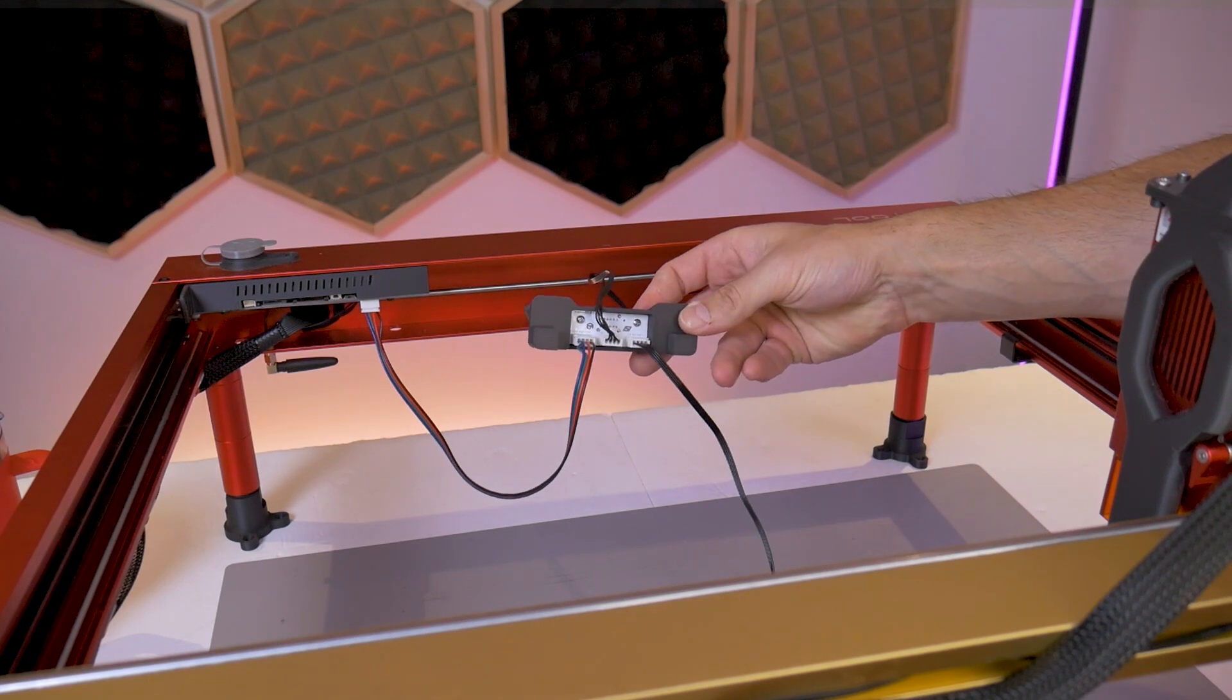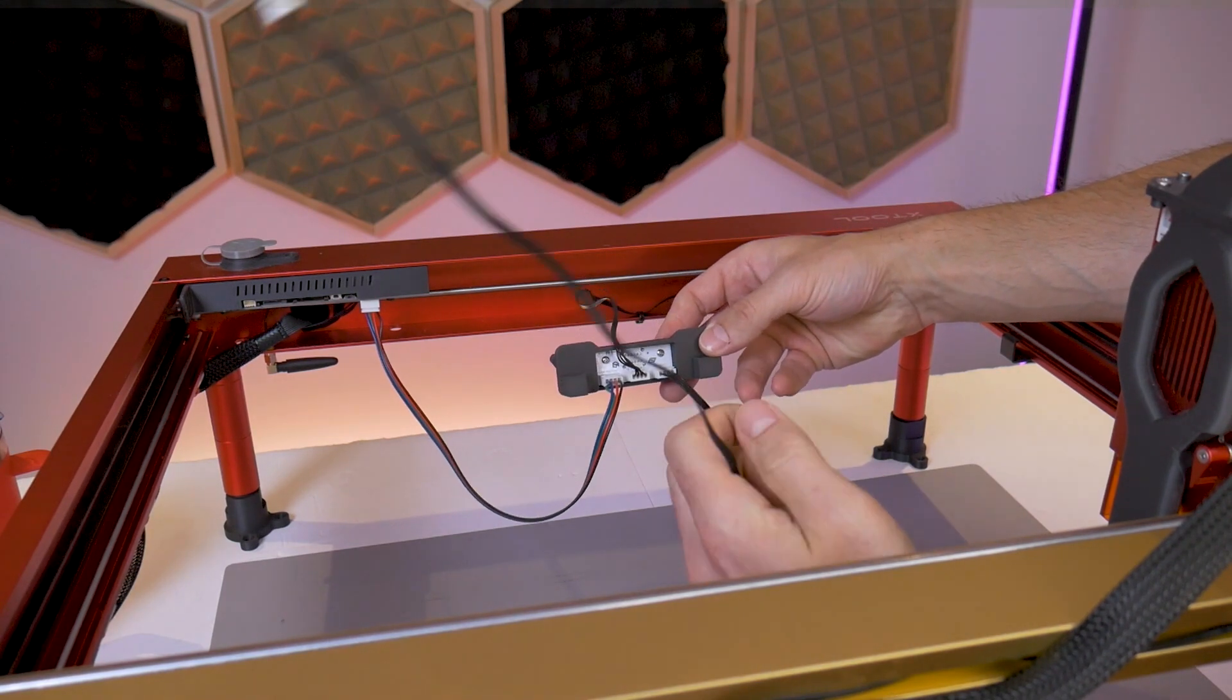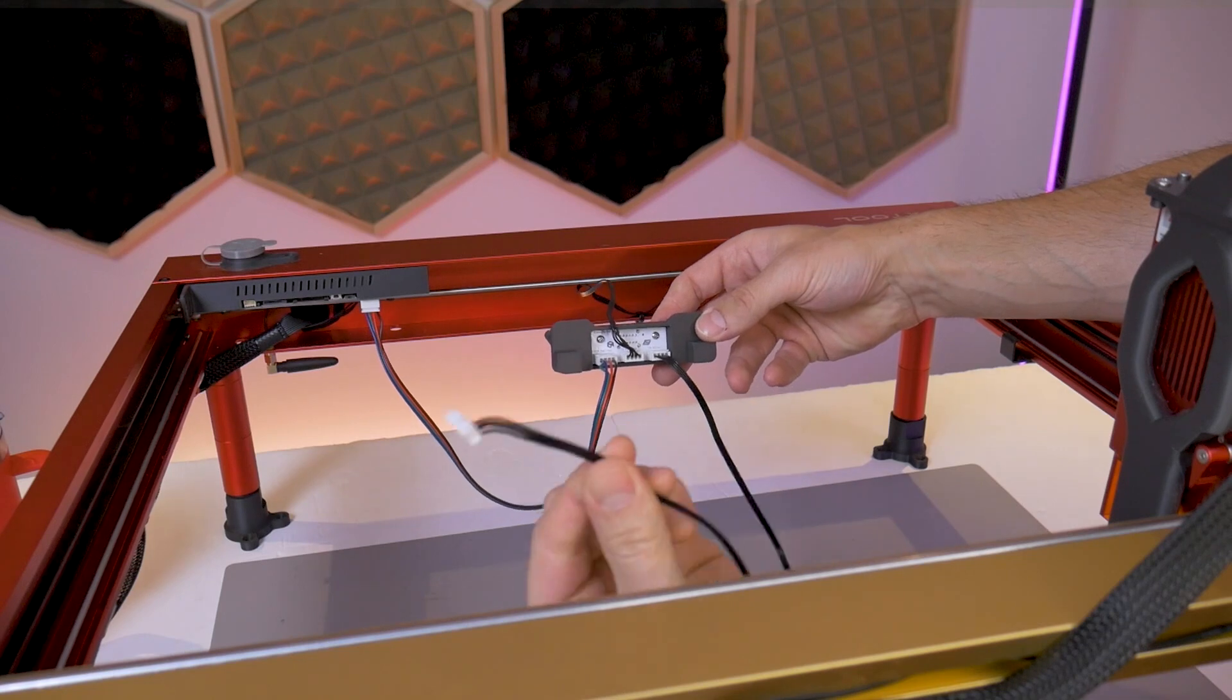At this point the only loose end is the six pin connector that would normally go to the RA2 rotary tool.